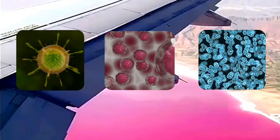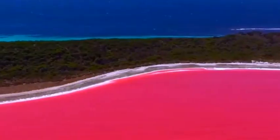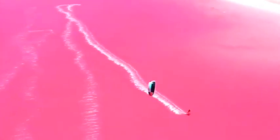Algae, bacteria, and archaea make up the bulk of Lake Hillier's water. For this reason, the pink color of the lake is thought to be a combination of these factors.